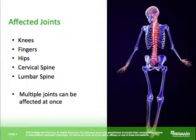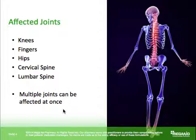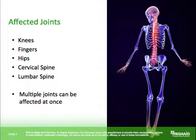Which joints are traditionally affected in osteoarthritis? An important point to realize is that somebody who has osteoarthritis may have multiple joints affected at once. Some of the common joints traditionally affected are your knees, digits, hips — which is why people have hip replacement surgeries — and also the lumbar spine and cervical spine.